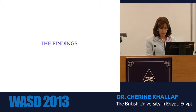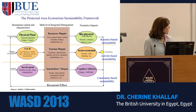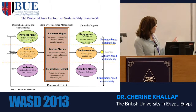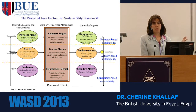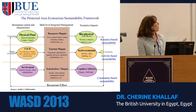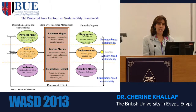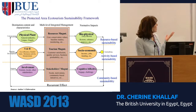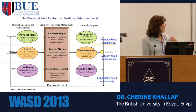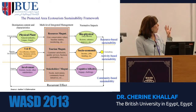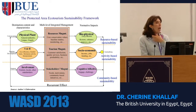Now we're moving to our findings. This is what the conceptual framework looks like. It starts with the main thing in a protected area — what we are proposing is that it's the physical plant that is at the center of any ecotourism activity in a protected area. By the physical plant, we mean the natural physical plant and the man-made physical plant. This goes through a process of resource management and produces what we call the biophysical effects.